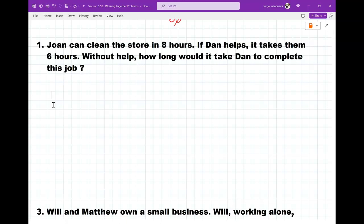So, Joan can clean it in eight hours. If Dan helps, it takes them six hours. Without help, how long would it take Dan to complete this job? So, I mean, I can assign X to the first name, Joan. So, X is equal to what? Eight hours. Alright. Do I know what Y is? No. That's what I'm solving for. What did they give me then? They gave me T, right? They said together. Because they mentioned them. It takes them six hours. That means together, they can do it in six. So, then what we've got to figure out is how long it takes Dan to do this.